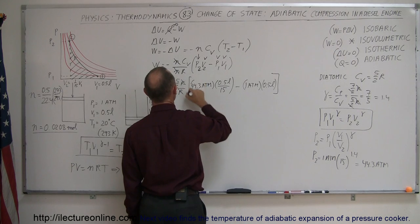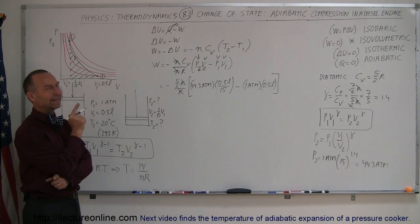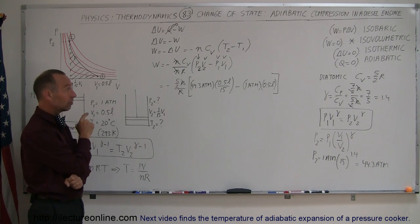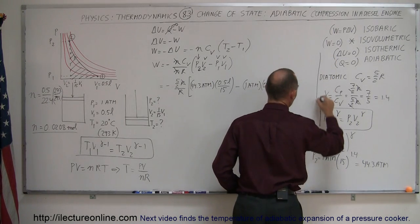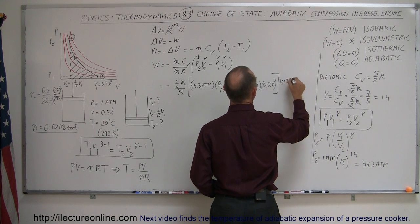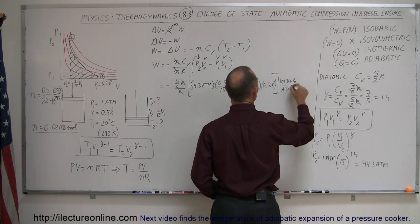But now we have atmospheres and liters, and we don't want to use that in our calculation. We want to convert to Pascals and cubic meters. Let me put a line here so I don't get this confused. So we need 101,300 Pascals per atmosphere. That's the conversion.